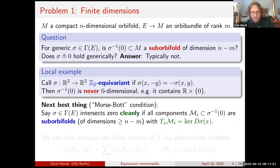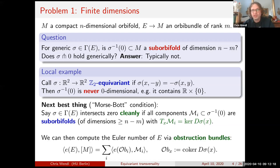We say a section intersects the zero section cleanly if all components of the zero set are smooth sub-orbifolds — dimensions potentially vary but are always ≥ the virtual dimension n−m. When you have that condition, the tangent space to those components is always contained in the kernel of the linearized operator. The clean intersection condition says that kernel is exactly that large — no larger. That makes the dimension of the kernel constant, and it follows the co-kernel dimension is also constant on each component. That gives a well-defined vector bundle called the obstruction bundle. By general nonsense, the Euler number of the section equals the sum over all components of the zero set of the Euler numbers of the obstruction bundles.